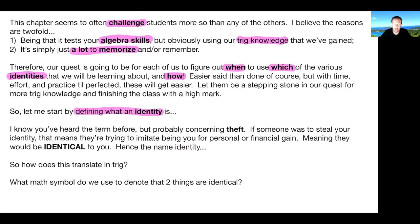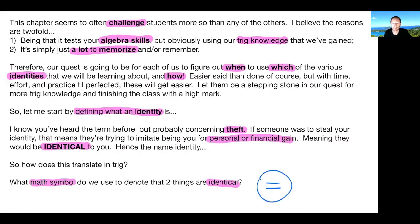I'm going to start by defining what an identity actually is. You've probably heard of identity theft — that's when somebody tries to steal your identity for personal or financial gain. So why do we call it identity theft? Because they're trying to be identical to you. How does this translate to trig? What math symbol do we use to denote that two things are identical? That would be the equal sign. When we're talking about identities, we're talking about two things that are equal — say A and X.